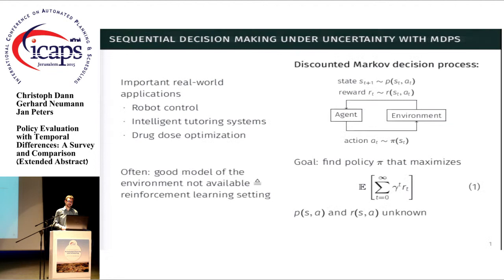Automated agents for sequential decision making under uncertainty have a plethora of applications in the real world. This includes, for example, robot control or intelligent tutoring systems, which helps students learning most efficiently by providing them with the right questions at the right time and giving them personalized hints. Another example in healthcare is drug dose optimization.